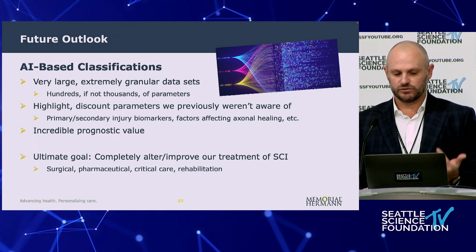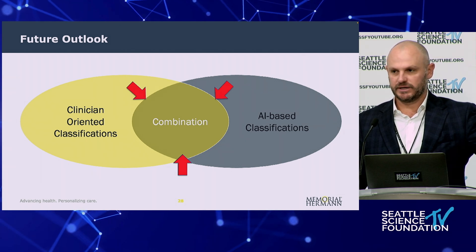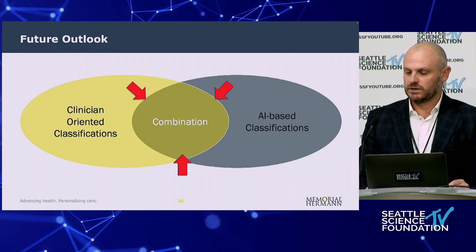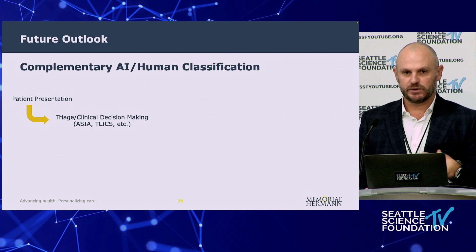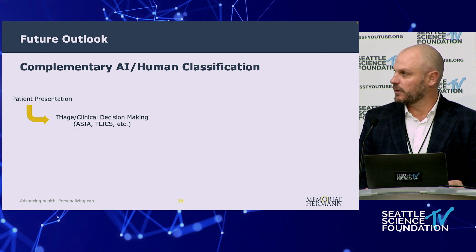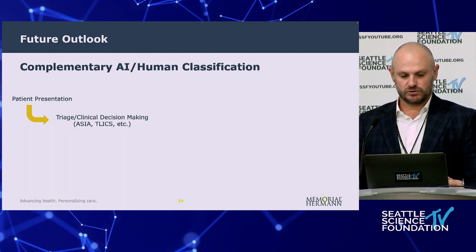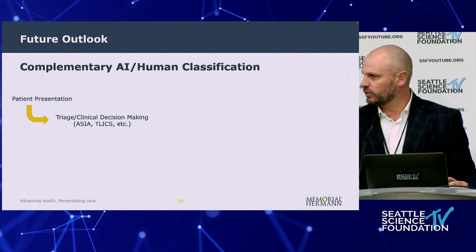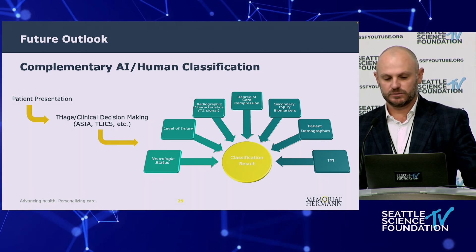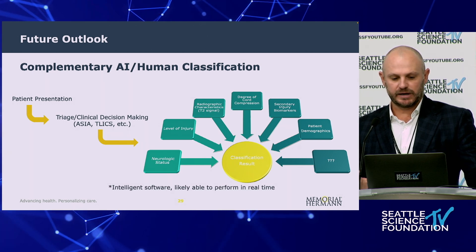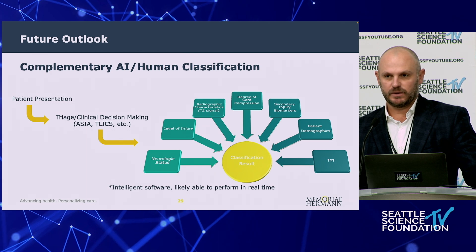How do we harness that power and get it out of a massive registry and use it in our hands? When a patient comes to our ER with spinal cord injury, we're going to be the ones evaluating those patients — the machine is not capable of doing that, at least not now. We're going to be the ones to triage and clinically make those decisions, using our own ASIA scores, T-Lex scores, or motor impairment scores. Once we do that, we will be able to supply the algorithms with that data and create a real-time classification result using AI software that can then produce a clinically meaningful classification and help guide our treatment.